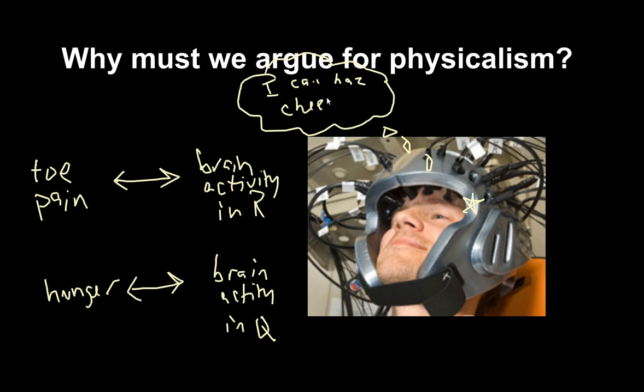And suppose this works every single time. Now, doesn't this show us, a lot of people wonder, a lot of people suppose, doesn't this show us that toe pain just is brain activity in region R? And, doesn't this show us that hunger just is brain activity in Q? And I would say, no, it doesn't show us that at all. Well, and Papineau would agree with this. That's why he has an argument for physicalism.